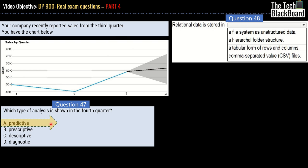Moving on with question number 48. Relational data is stored in: a file system as unstructured data, as a hierarchical folder structure, a tabular form of rows and columns, or comma separated value CSV files? If you look at relational tables, they are very close to excel files. In excel we store data in rows and columns, and in tables we also store data in rows and columns. So the correct answer is tabular form of rows and columns.